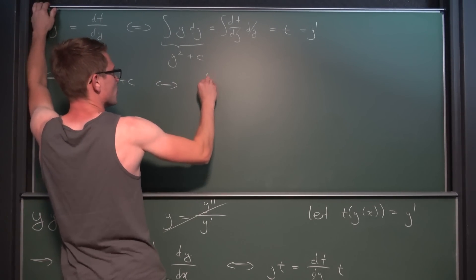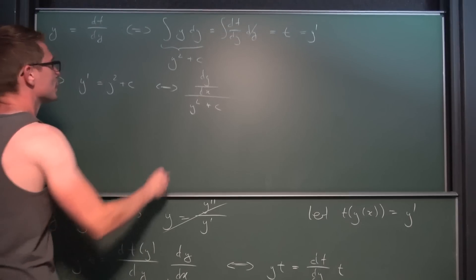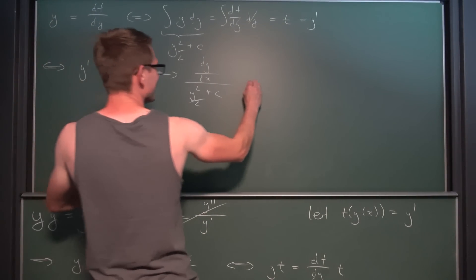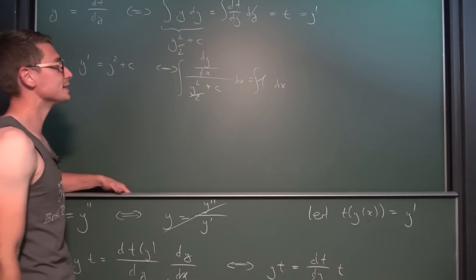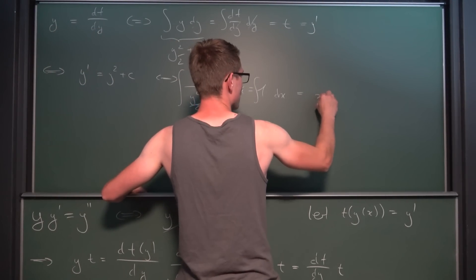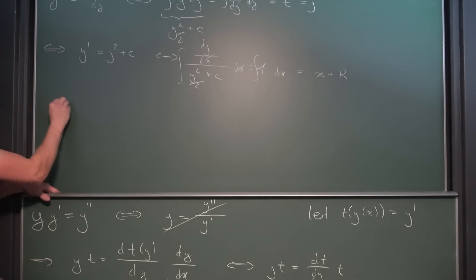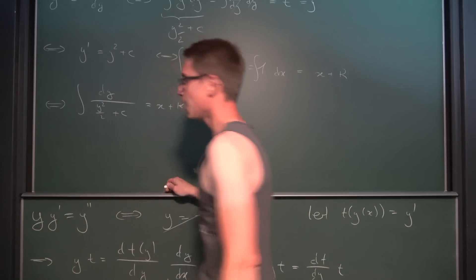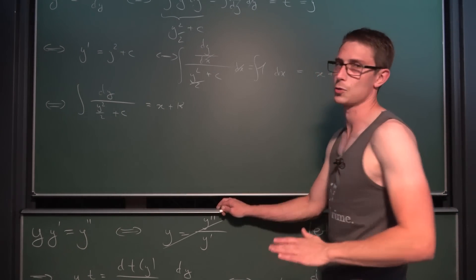Now we can use separation of variables: divide both sides by y²/2 + c, then integrate both sides. Writing y prime as dy/dx and dividing by y²/2 + c gives us dy/(y²/2 + c) = dx. Integrating the right side with respect to x gives x + κ, where κ is an arbitrary constant. So we have the integral of dy divided by (y²/2 + c) equals x + κ. We are going to manipulate the left-hand integral — we have used this type of integral before on this channel — and factor out the 1/2.